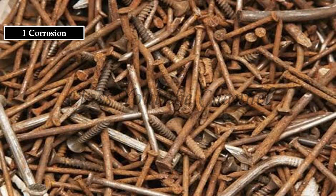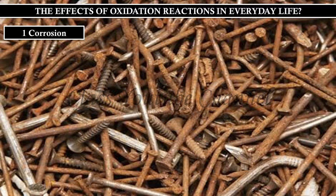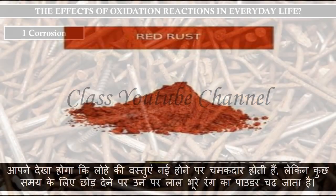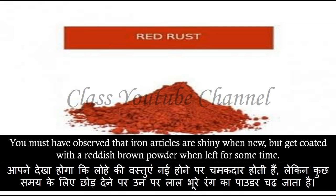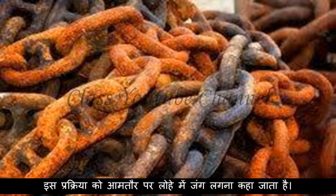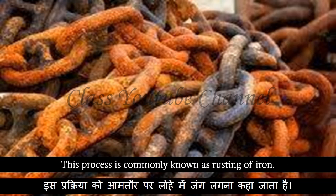Have you observed the effects of oxidation reactions in everyday life? You must have observed that iron articles are shiny when new, but get coated with a reddish brown powder when left for some time. This process is commonly known as rusting of iron.